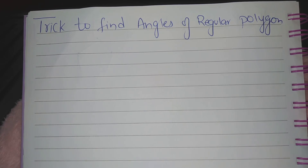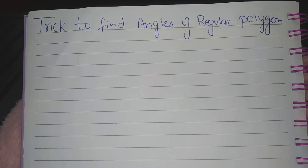What is a polygon? A polygon is a figure that has at least three straight lines and angles, and typically five or more.